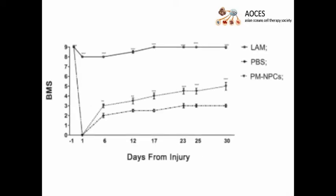The T9 contusion demonstrated in this video caused the transient loss of hind limb function. Three times 10⁵ cells, or PBS, were injected into the tail vein in three injections carried out 30 minutes, 6 hours, and 18 hours after injury. Within two to three weeks, PBS-treated injured mice improved and hind limb function reached 3 points of Basso Mouse Scale, or BMS. Mice treated with PMNPCs, however, showed a higher recovery and reached 4.5 points of BMS.